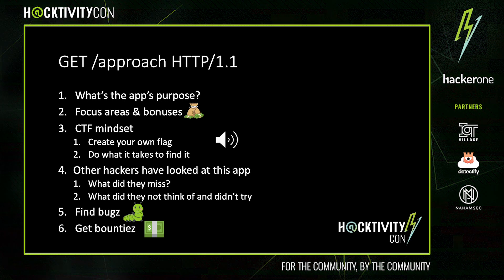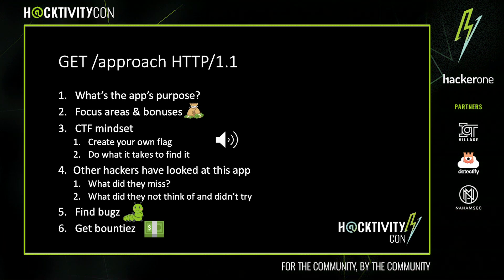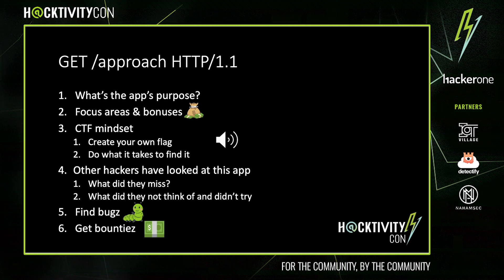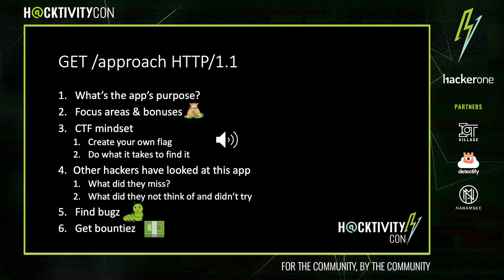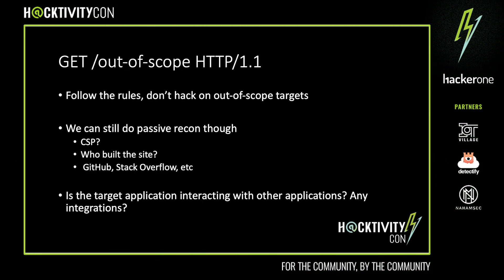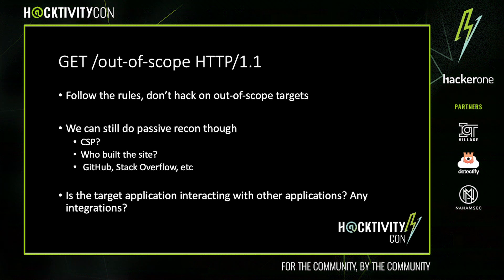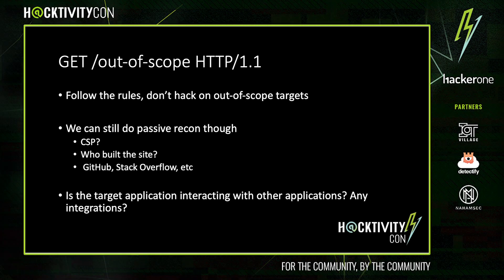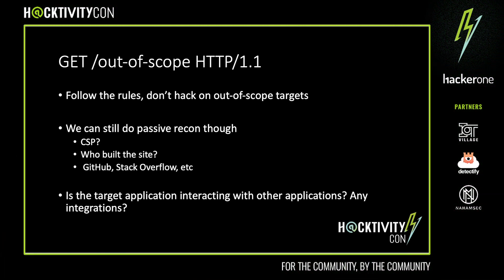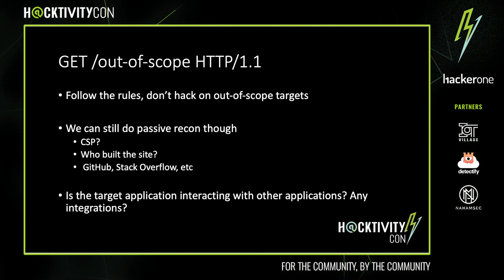Follow their program's rules and don't hack on out-of-scope targets without permission. But that doesn't mean we can't do passive recon on those targets. It might not even be targets listed in the out-of-scope section — it could be assets that you see interacting with the application you're trying to hack. For example, domains listed in a content security policy: why are they there and what's the relation between them and the target? Who built the site — in-house or a third-party vendor? Sites built by third-party vendors but maintained by the target company can be fruitful for recon. We can always look at GitHub, Stack Overflow, and other websites which could contain helpful information.